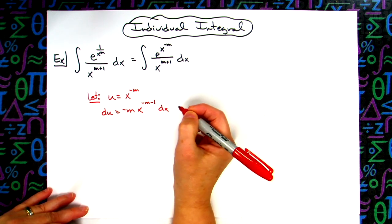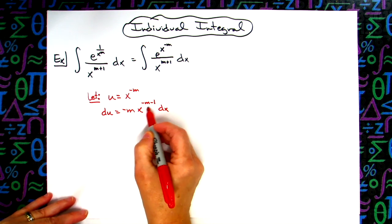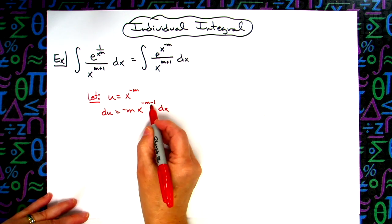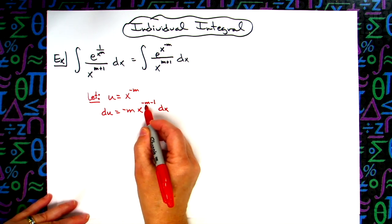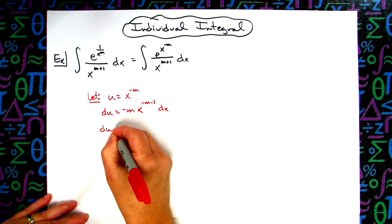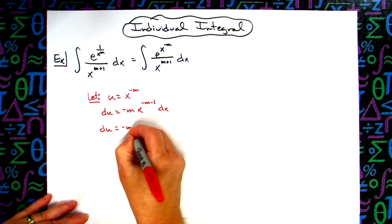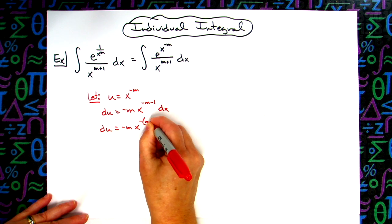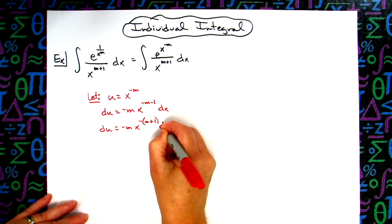Now before I go ahead and solve all the way down for dx here, let's take this, because this is really close to this. We want to try to make it match. So let's factor out a negative. So that'll give me du is equal to negative m x raised to negative m plus 1.